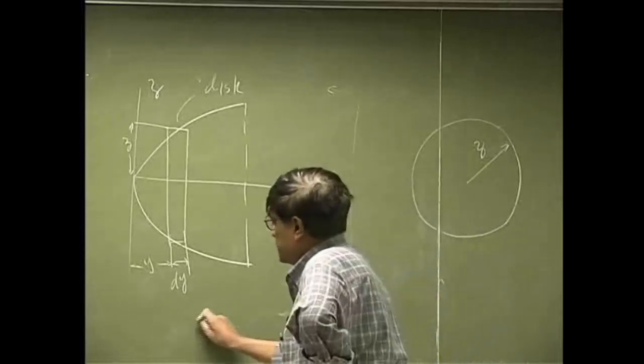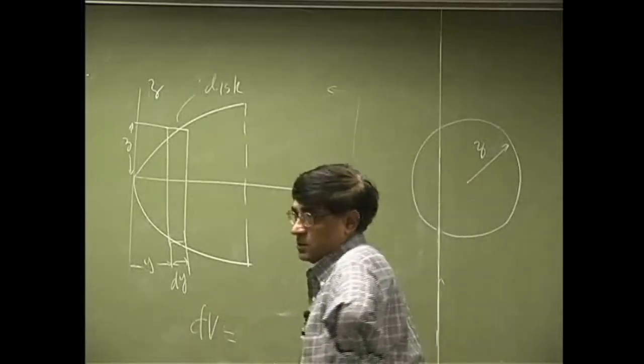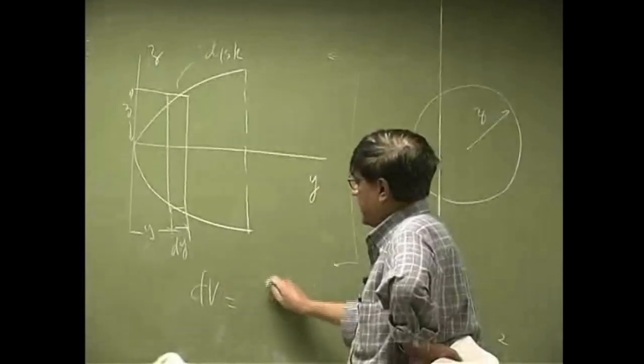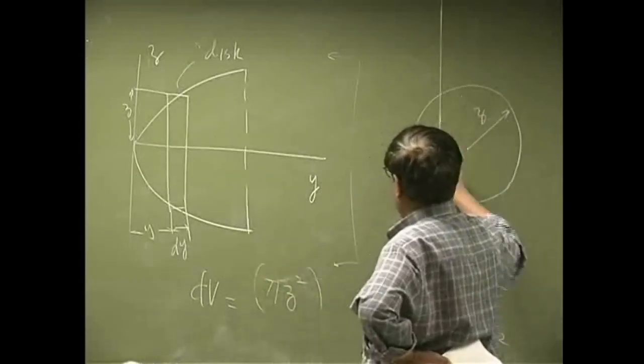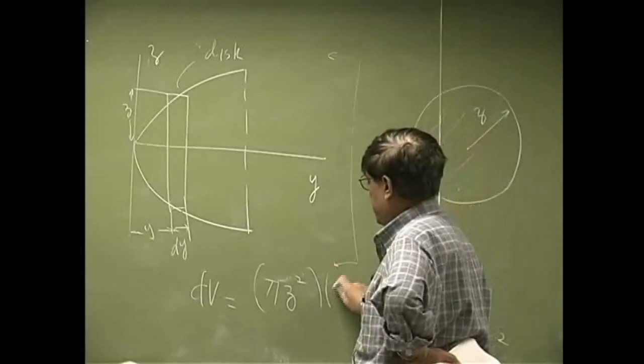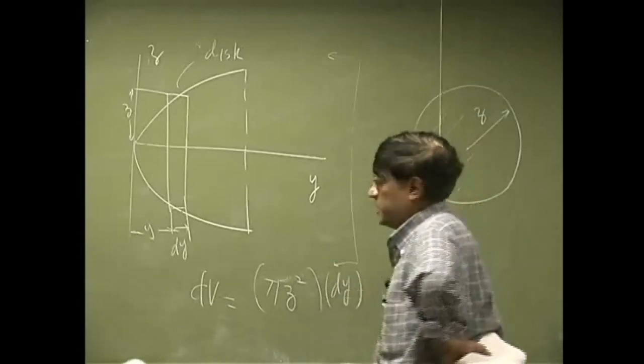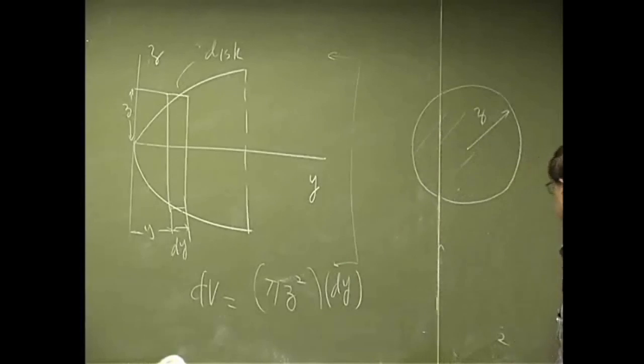Which means the volume for the disk will be pi z squared, that's this area, multiplied by the thickness, that is dy. That gives you the volume for the disk we're working with.